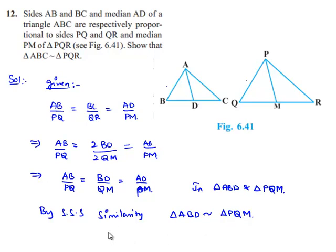So here I am equating angle ABD is equal to angle PQM, which is nothing but angle ABC is equal to angle PQR.